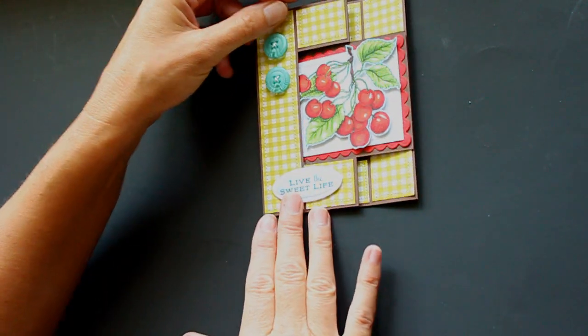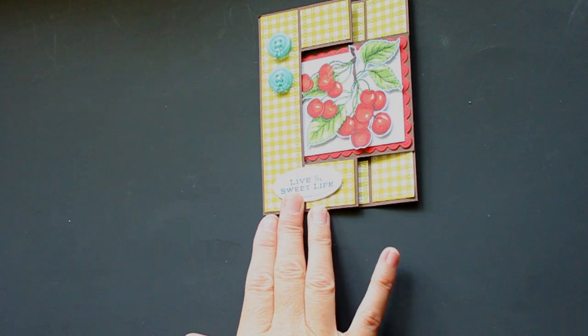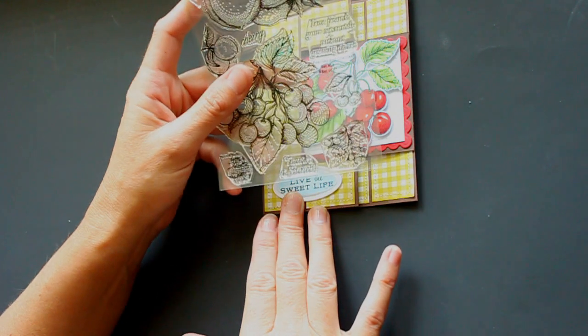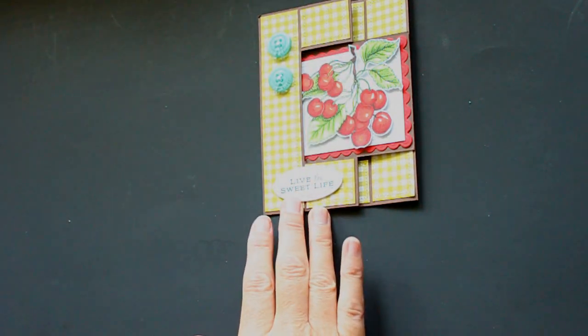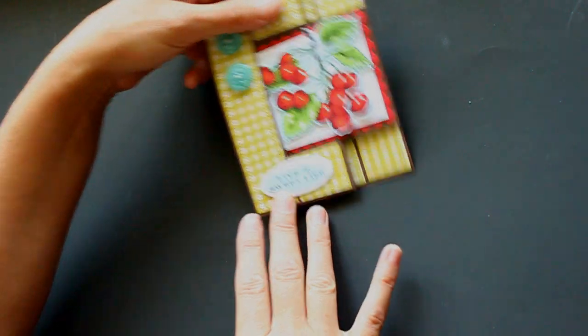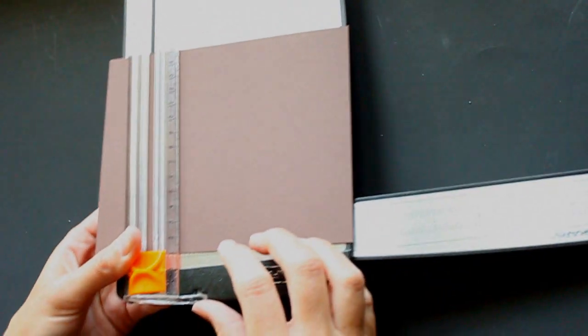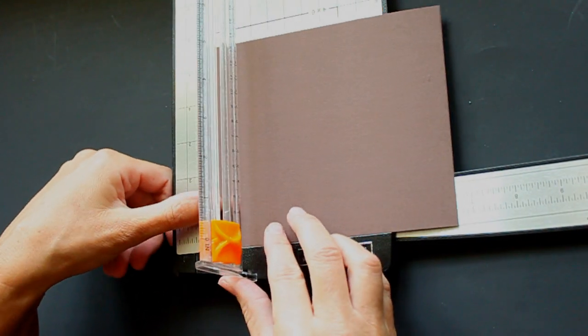The stamps used in the sample are from Flourish's Peaches and Cherry set, and the paper is from October Afternoon, my current favorite. To begin with, you'll need a 5 1⁄2 by 6 3⁄4 inch piece of cardstock and a paper cutter with a scoring tool.